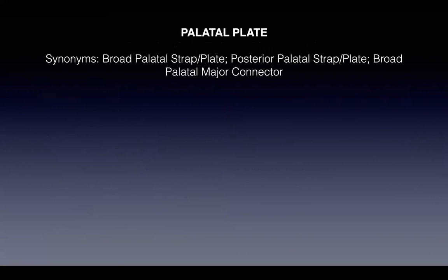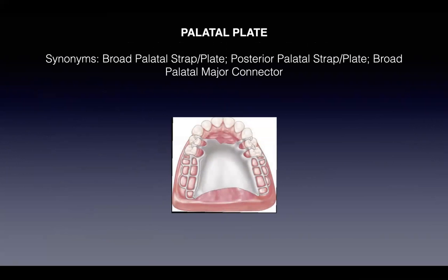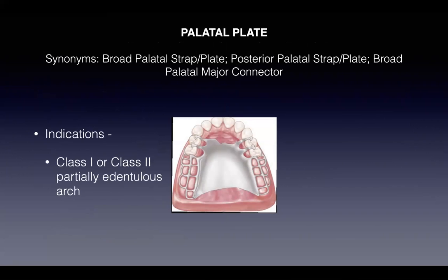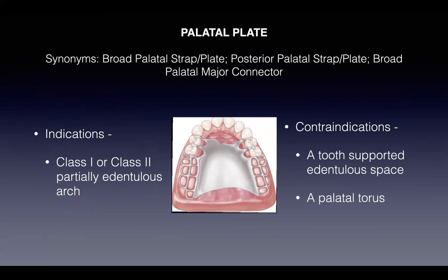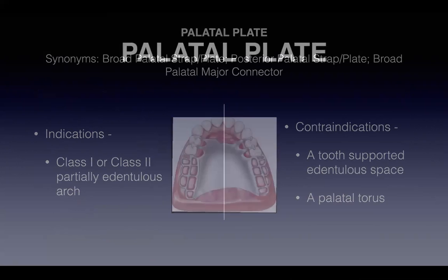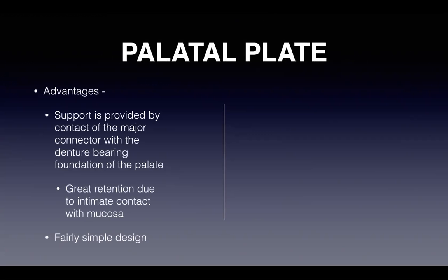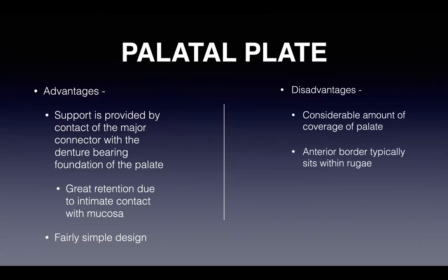The palatal plate (synonyms: broad palatal strap/plate, posterior palatal strap/plate, broad palatal major connector) is indicated for Class I or Class II partially edentulous arches. Contraindications include a tooth-supported edentulous space or palatal tori. Advantages: support provided by contact of the major connector with the palate's denture-bearing foundation, great retention due to intimate mucosal contact, and simple design. Disadvantages: considerable palatal coverage, and the anterior border typically sits within the rugae — the tactile-sensitive area frequently engaged by the tongue.